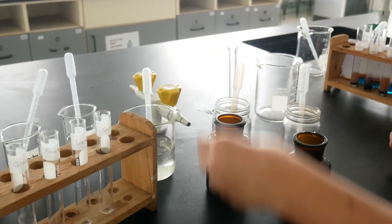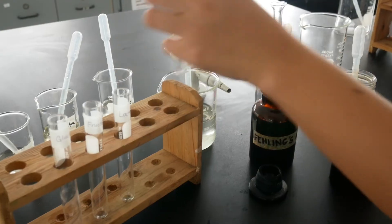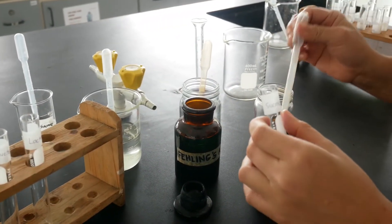Our next test is Fehling's test, which is a reduction test to determine the presence of reducing sugars. It differs from Benedict's test in that Fehling's reagent contains Rochelle's salt or sodium-potassium tartrate in place of sodium citrate.